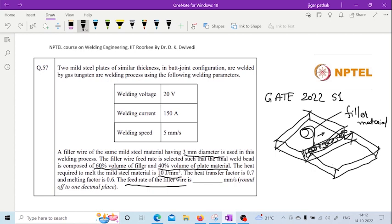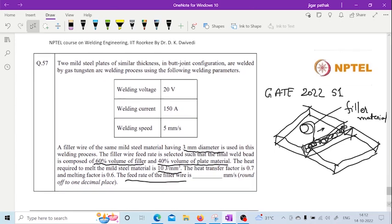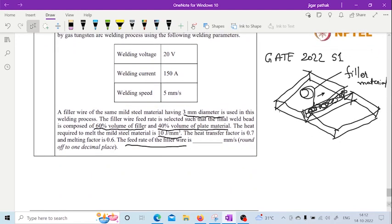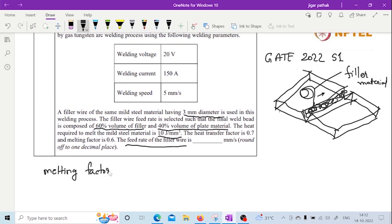we will perceive it as you can see in this given figure, these mild steel plates are there and this filler, which is also mild steel. So if you see in the given figure, how we can proceed, we can use this melting factor.